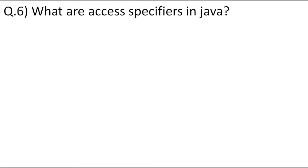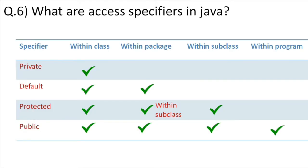What are access specifiers in Java, and what is the order from most restrictive to least restrictive? There are four access specifiers. Starting from the most restrictive: private, which can be accessed only within the class; then default, which can be accessed only within the package; then protected, which can be accessed in the subclass or within the class; and finally public, which can be accessed anywhere in the program.